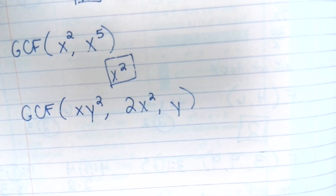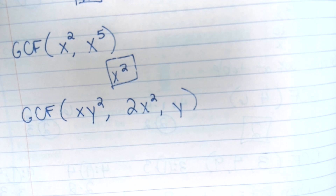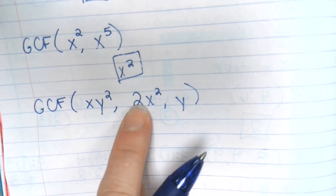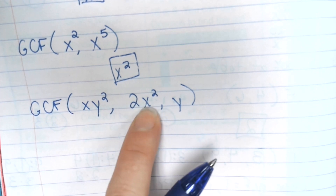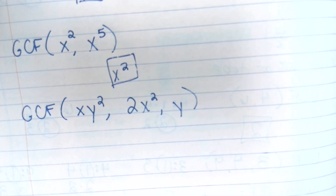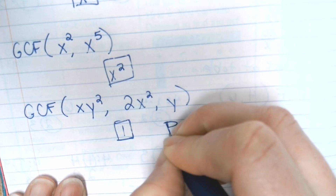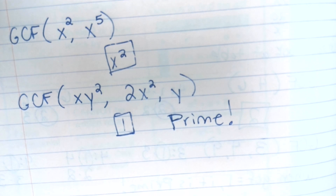Of course I had to throw in different things. Now with variables, do they all have an x? This has an x, this has an x — but does this have an x? No. Now this has a y — does everything have a y? No. So do they have anything in common at all? No. So this is 1, which means it's prime. If they don't all have the same thing in common, it's prime.